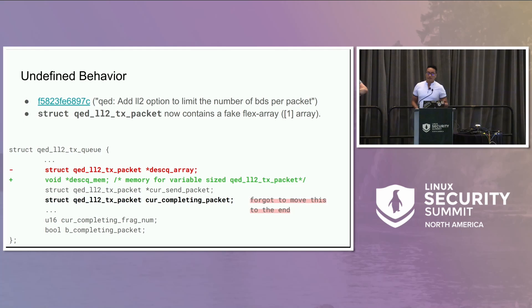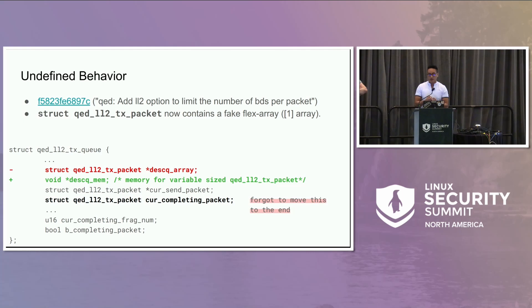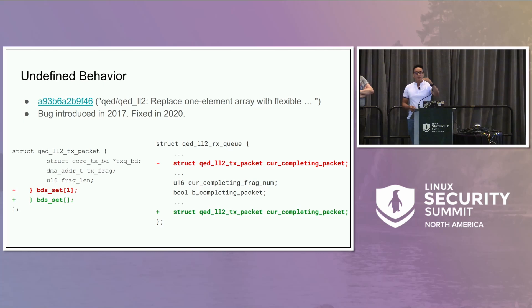They forgot to move the declaration of that member to the end of the structure. While doing refactoring work, I ran into this one-element array, and when I transformed it into a flexible array member, I noticed the problem. I transformed the one-element array into a proper C99 flexible array member and moved the declaration from the middle of the structure to the end. That fixed the issue. This bug was introduced in 2017 and was fixed in 2020.